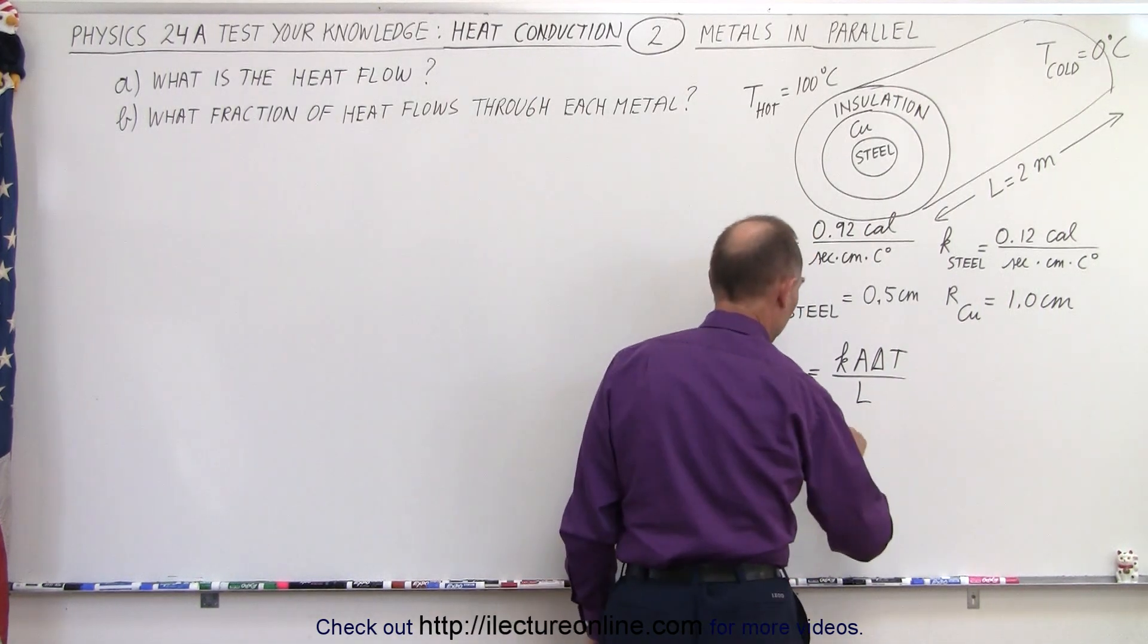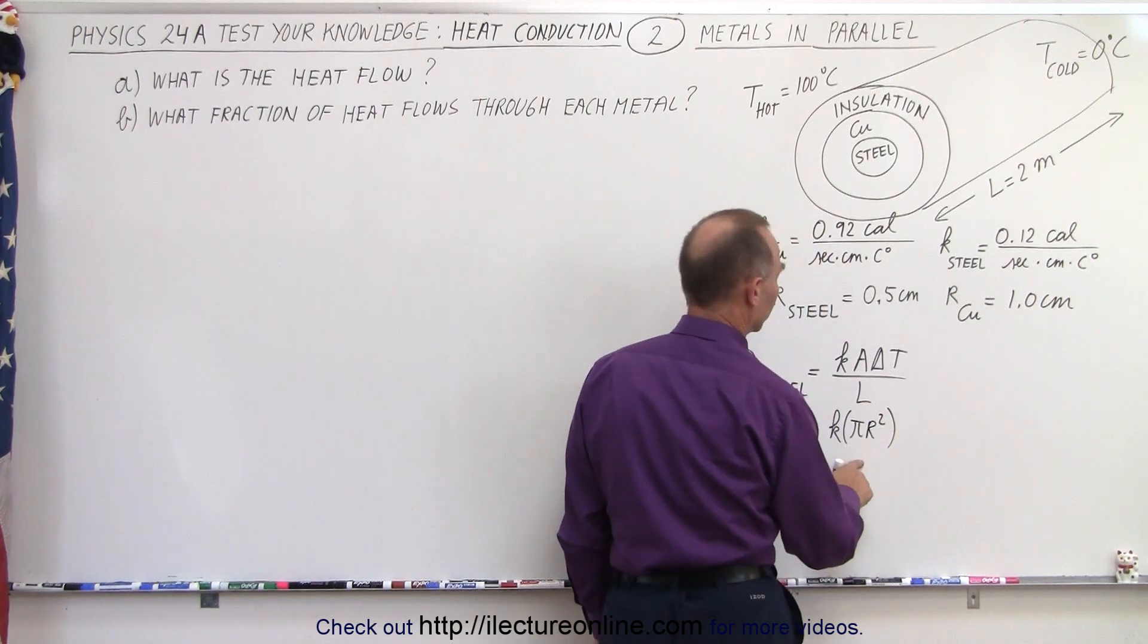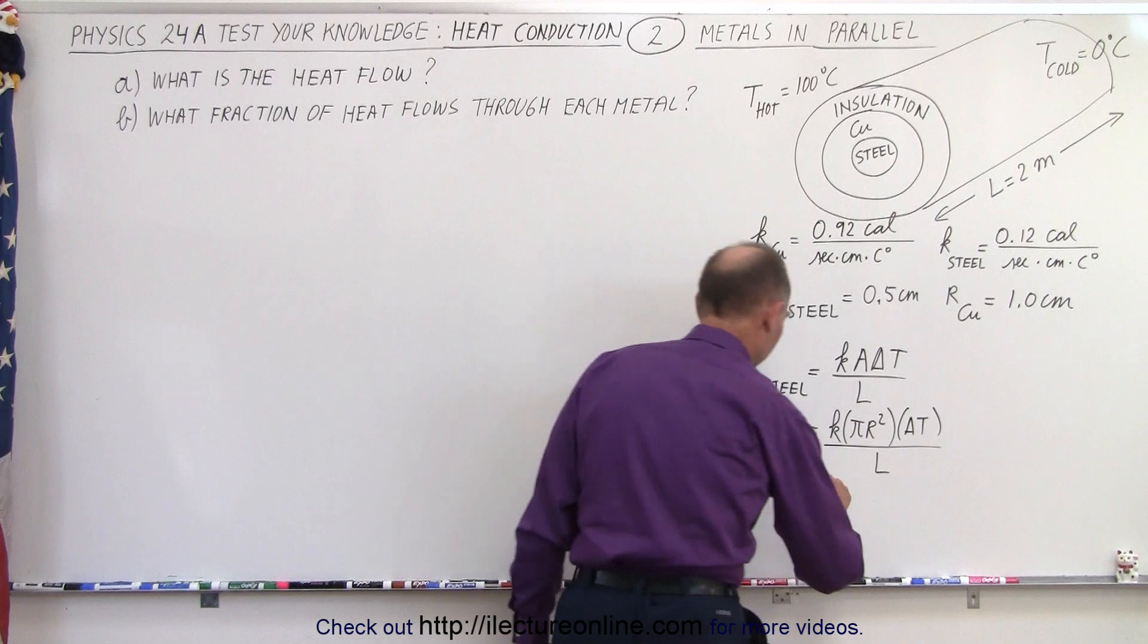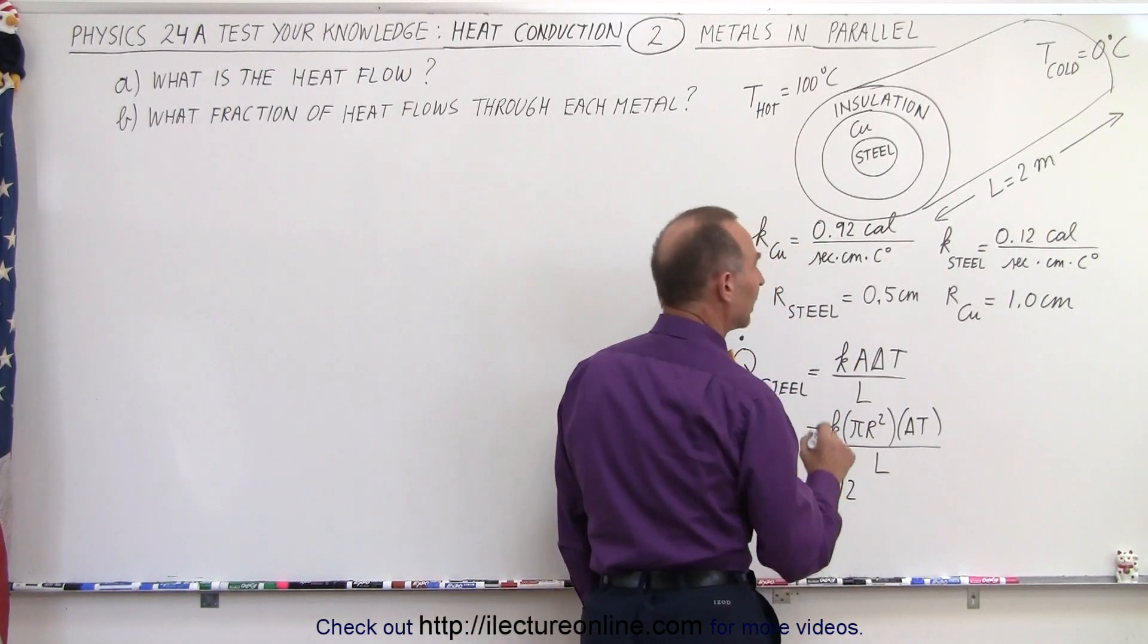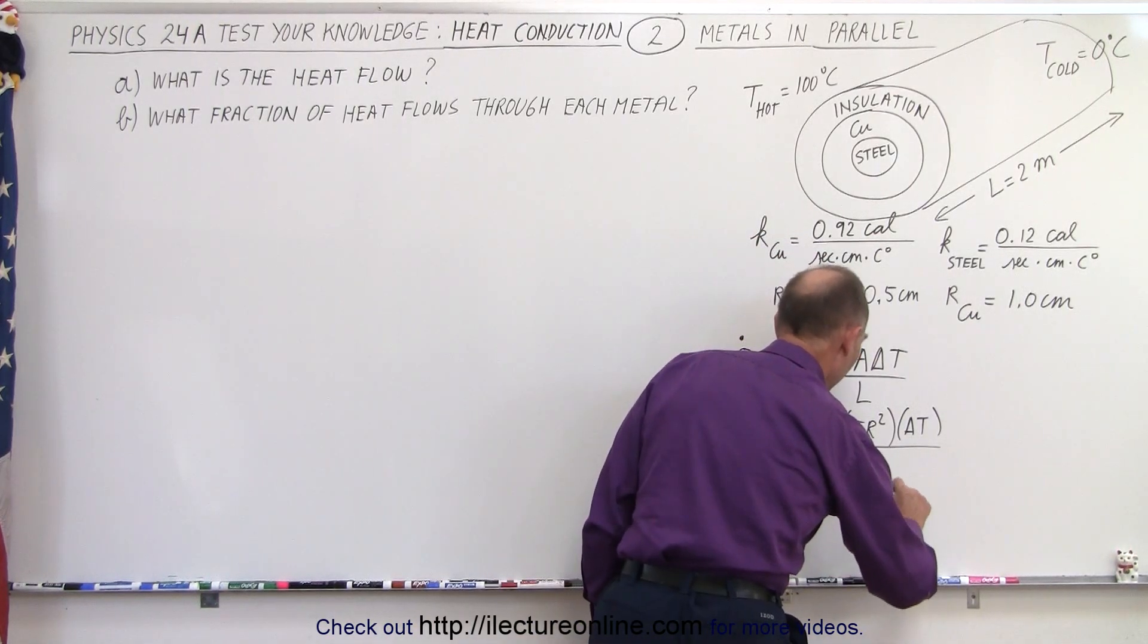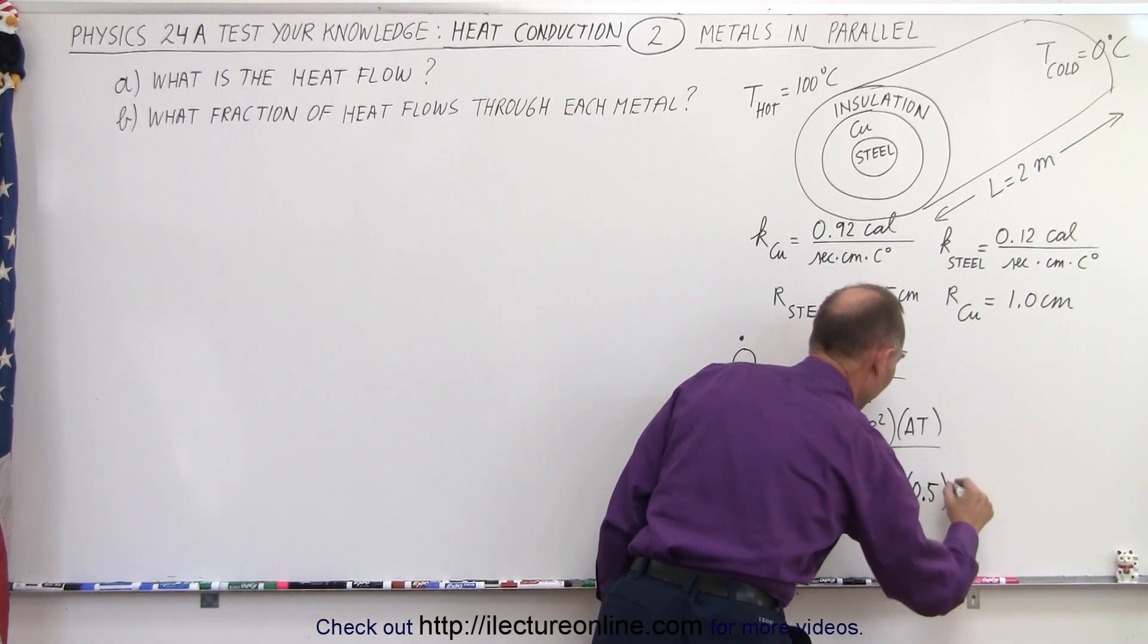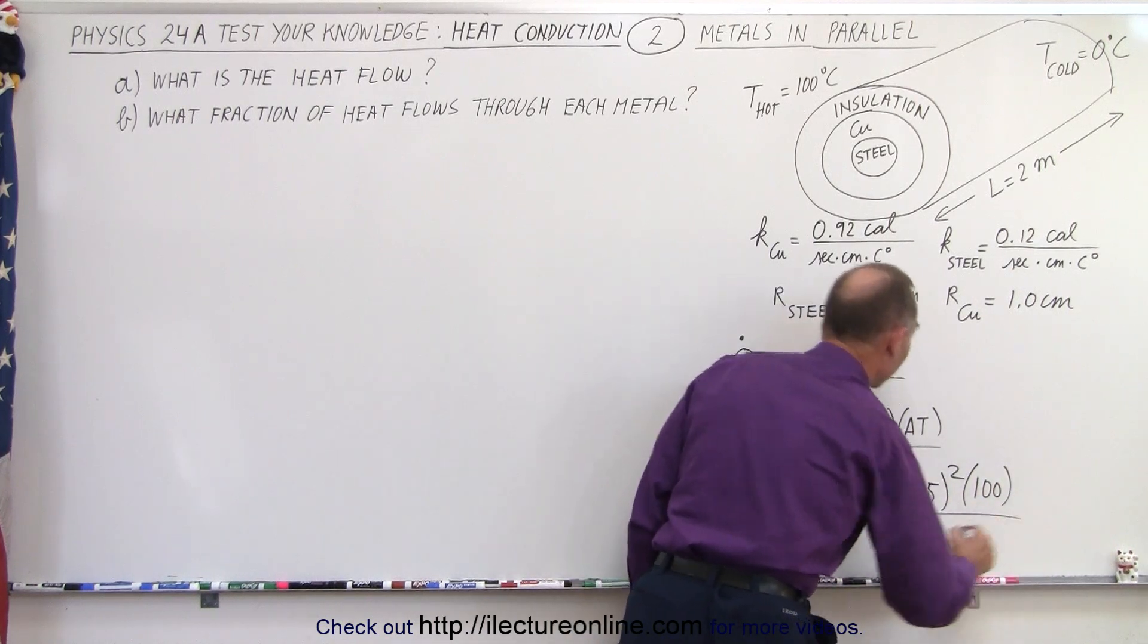So in this case that would be equal to K times pi r squared times the difference in the temperature divided by the length. And in this case, we want to plug in the numbers because we're dealing with steel. Steel we have 0.12 calories per second, so we're going to leave the units off to make it a little bit cleaner, times pi times the radius squared. Now the radius is defined as 0.5 centimeters, so 0.5. We have to square that times the difference in the temperature, 100, all divided by the length.